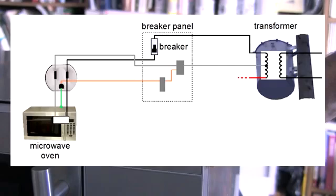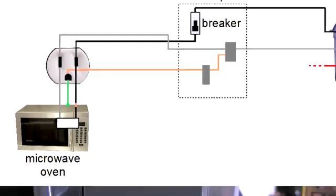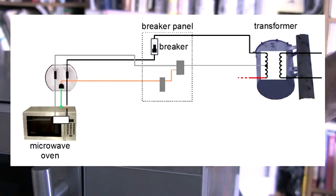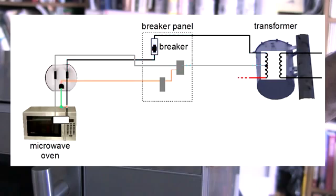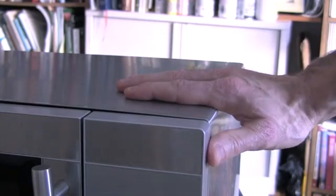Let's look at it again on the diagram. The problem starts when the insulation on the hot wire breaks and the wire touches the microwave oven's case. Since the case is connected to the ground wire, we now have this complete circuit along the ground wire to the breaker panel, then along the neutral wire, onward to the transformer on the pole, through the transformer's coil, back through the hot, through the breaker, and continuing to the hot in the microwave oven where it's touching the case. There's very little resistance along that circuit, and so the electrical current will be very high — high enough to trip the breaker, which opens the circuit, making it safe to touch the microwave oven's case again.